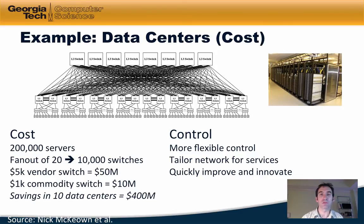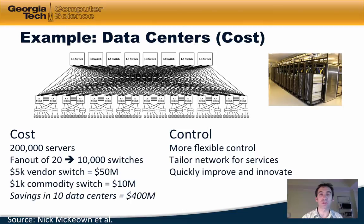The benefits of that separate control result in more flexibility, the ability to tailor the network for specific services, and the ability to quickly improve and innovate. Once the control plane is separate from the data plane, it is a lot easier to control the behavior of the network because those switches are doing nothing more than forwarding traffic and all the intelligence of the network is in the software control.